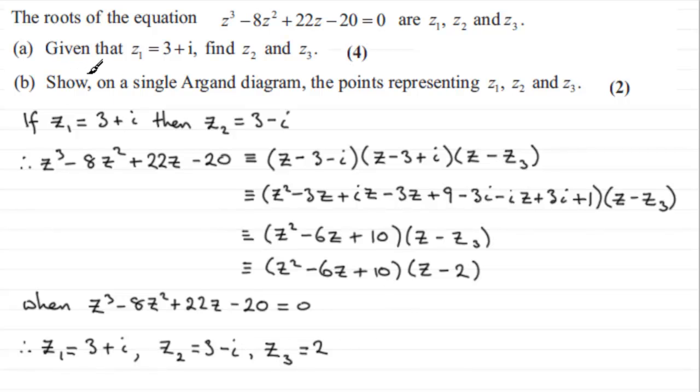Now in part B, we've got to show on a single Argand diagram then the points representing z1, z2 and z3. So for part B, I can see that there's no negative real numbers here. So I'm going to just have my imaginary axis here. My real axis doesn't have to extend too far into the negative section here. So we'll have that as the real axis.